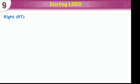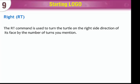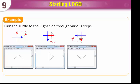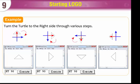Right: The RT command is used to turn the turtle to the right side direction of its face by the number of turns you mention. Command: RT, number of turns. Example: turn the turtle to the right side through various steps. RT90, execute. RT90, execute.